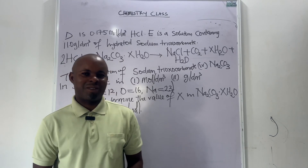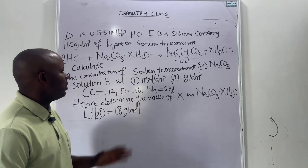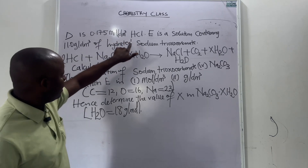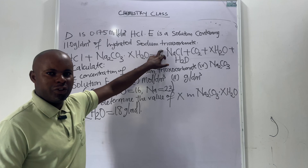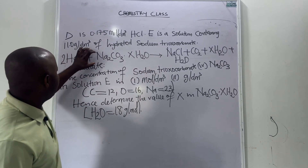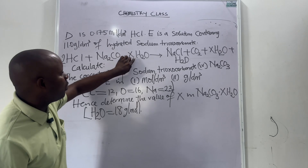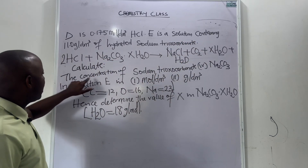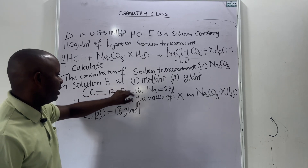Welcome to my channel. In our previous lesson we treated some examples on quantitative analysis. There is a second question on the series. The question goes this way: if D is 0.175 mol per dm³ of HCl, that is the acid, and E is a solution containing 11.0 grams per dm³ of hydrated sodium carbonate. This is the equation of the reaction. At the end we are going to determine the water of crystallization. We calculate the concentration of the sodium carbonate, NaHCO₃, in solution E in mol per dm³ and gram per dm³.